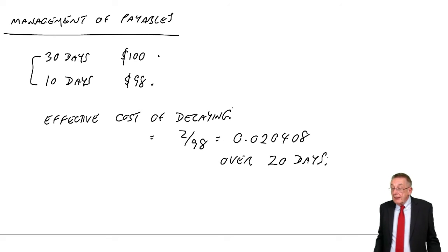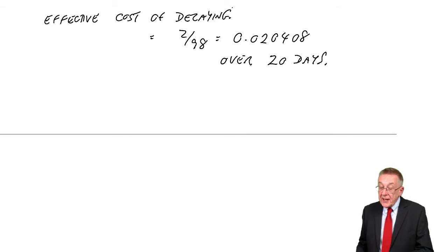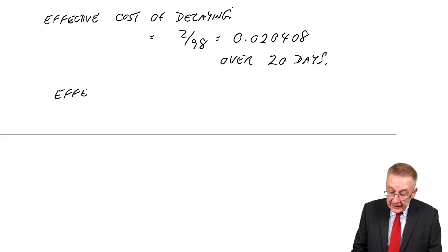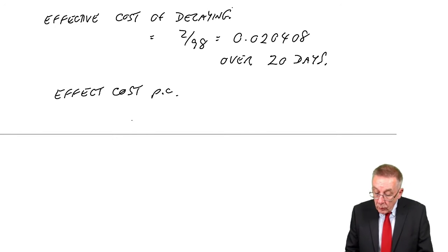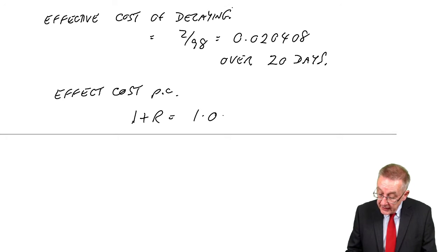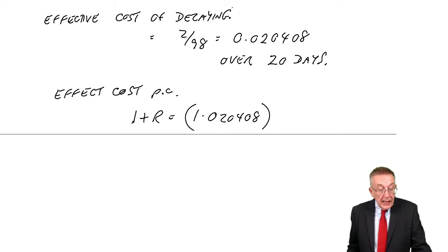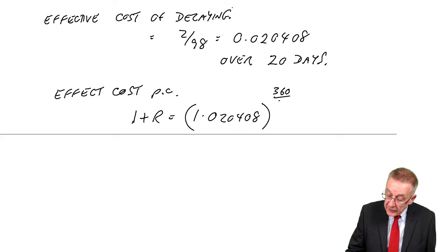It's the cost of delaying, or the effective benefit of paying early. It's 2% over 20 days. The question wants the annual effective cost. The effective cost per annum, just like I explained when we were doing receivables, 1 plus the yearly rate is 1 plus the period rate, 0.020408, to the power of the number of periods. The examiner always says how many days to assume in a year. I'm going to assume 360 days, in which case the number of periods is 360 over 20, which is 18.